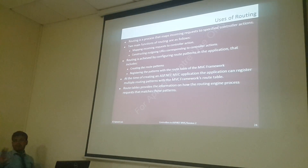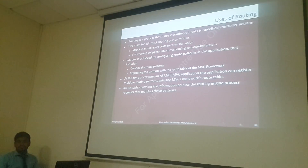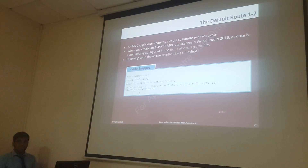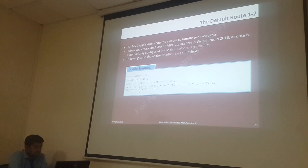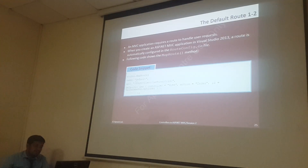The routing engine is the main component — it is going to execute and route. From the route configuration you have modified, it will take your configuration and route to the particular information. For example, we are showing the default route. In this application, it requires a route to handle user requests. When you create the application, the route is automatically configured in RouteConfig.cs. By default it shows: route name, controller, action, id format. The default controller name is Home, action method is Index, and id is UrlParameter.Optional.